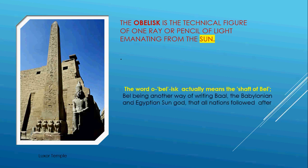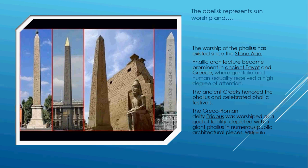Did you know the word 'obelisk' actually comes from the word 'shaft of Baal'? And we know Baal is just another name for Baal. The obelisk represents sun worship and the worshiping of Ra. But did you also know that it also represented worship of the phallus?